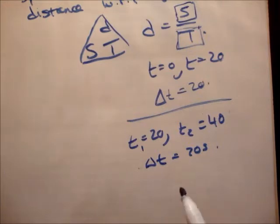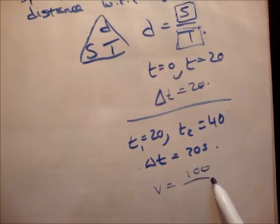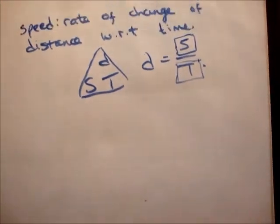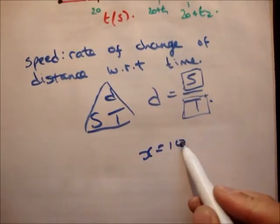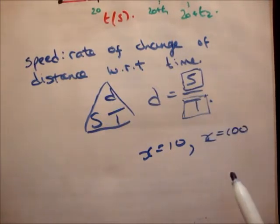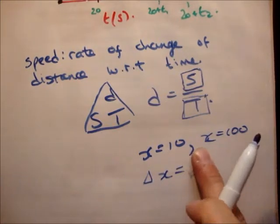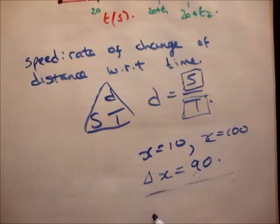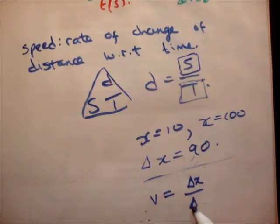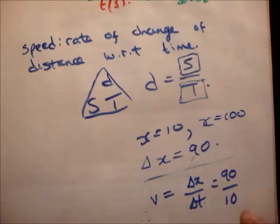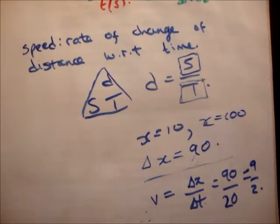And then you would say something like v is equal to whatever distance, like 100 over 20 seconds. You would say the exact same thing for your distance. For example, it began at x equal to 10 meters, it finished at x equal to 100 meters. The distance is equal to delta x, so the distance travelled would be 90 meters. So you might have that the speed equals delta x over delta t, which equals 90 over 20.